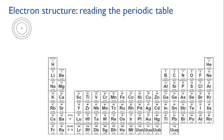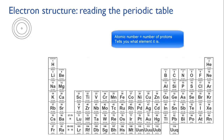Let's have a look at the periodic table and what it can tell us about atomic structure. The elements are ordered by atomic number — you can see that at the top of each box. Here hydrogen is number 1, helium is number 2, and so on. That tells you how many protons are in the atom, and it defines the identity of the atom.